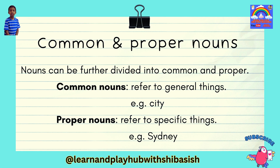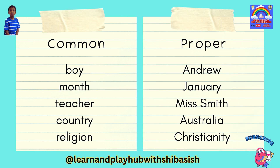Common nouns refer to general things, e.g. city. Proper nouns refer to specific things, e.g. London. Common noun examples: boy, month, teacher, country, religion. Proper noun examples: Andrew, January, Mrs., Australia, Christianity.